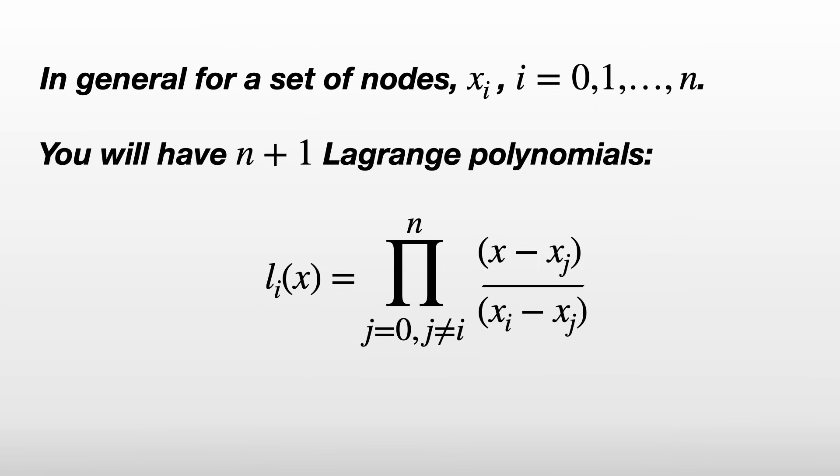Notice too that this is a polynomial of order n, since there are n lots of (x - something) multiplied together. I'll use this fact later on.